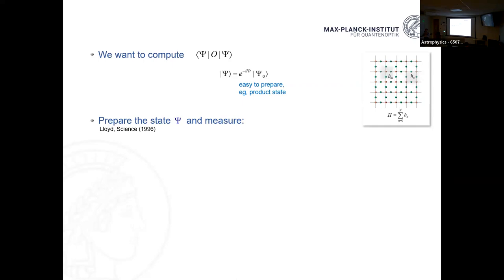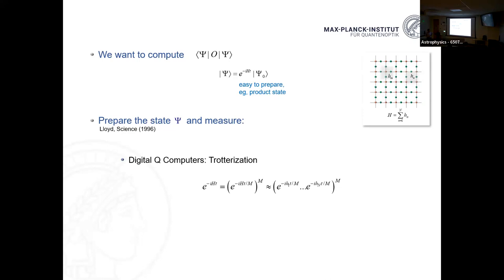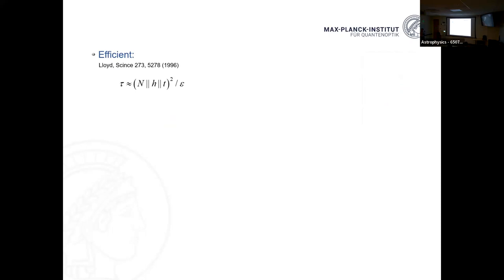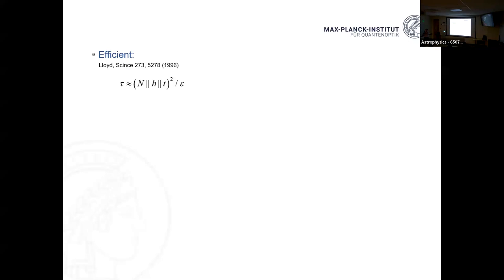The only question is how to perform this evolution — how, given some initial state in a quantum computer, you implement an algorithm that describes the evolution. For an analog quantum computer it's simple — just let it evolve and measure at the end. For a digital computer, what Lloyd proposed is to trotterize the time evolution operator: divide into small time steps, and each time step can be approximated with a quantum circuit. In that original paper, the computational time on a digital quantum computer scales like the number of qubits squared times the prescribed time squared divided by the error epsilon.